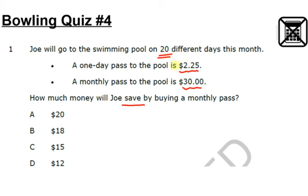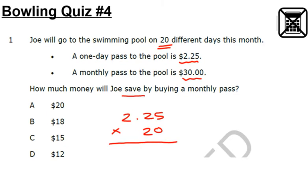So first you need to calculate how much it would be for Joe to buy a one-day pass on 20 different days. To do that, you're going to do 2.25 times 20 days. Now remember, when you're multiplying decimals, do not worry about the decimal point until the very end. Zero times five is zero. Zero times two is zero. Zero times two is zero.